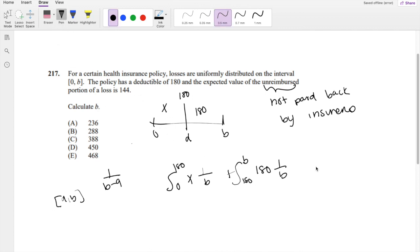So when you add those together, you should get 144. That's what they're saying. Alright, so we're solving this in terms of DX. This will be X squared over 2B, evaluated from 0 to 180. This one is just 180 over B times X, evaluated from 180 to B.